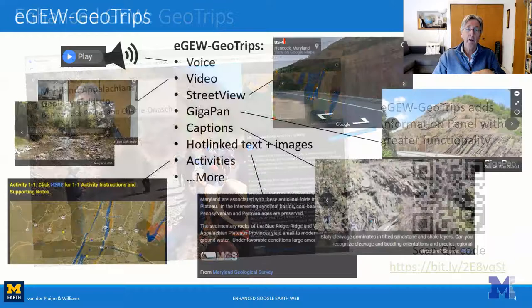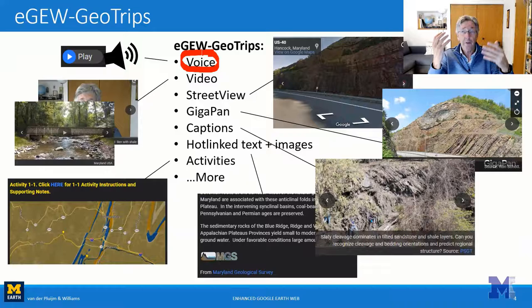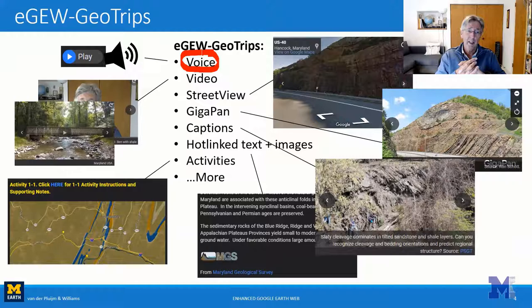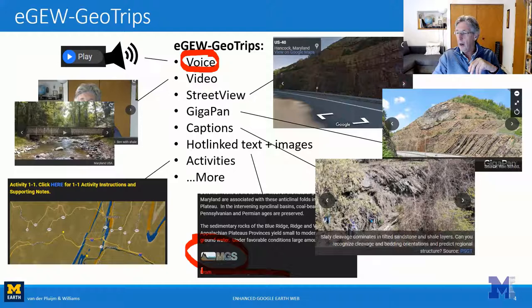What motivated us was we wanted to add voiceovers — we wanted to do a field trip experience. As we went along we got a little creative and added all kinds of other things: we can now insert videos, insert Street View, large-scale gigapans from other sources, captions on images indicating what you see and where it came from, images embedded in text, and hotlinks that students can click to move to new layers. We can also build activities by directing students to specific content, so this whole range of functionality became available by taking over that panel.